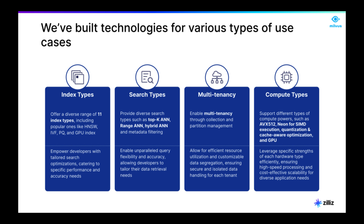Milvus has a number of features, but I want to point out some that are central to your AI app. Milvus supports 11 different index types. Indexing is a process of efficiently organizing data, and it plays a major role in making similarity search useful by dramatically accelerating time-consuming queries on large datasets. To improve query performance, specify an index type for each vector field. Milvus also has a diverse set of search types: searches can be configured for top-K, range, hybrid, and also add metadata filtering.